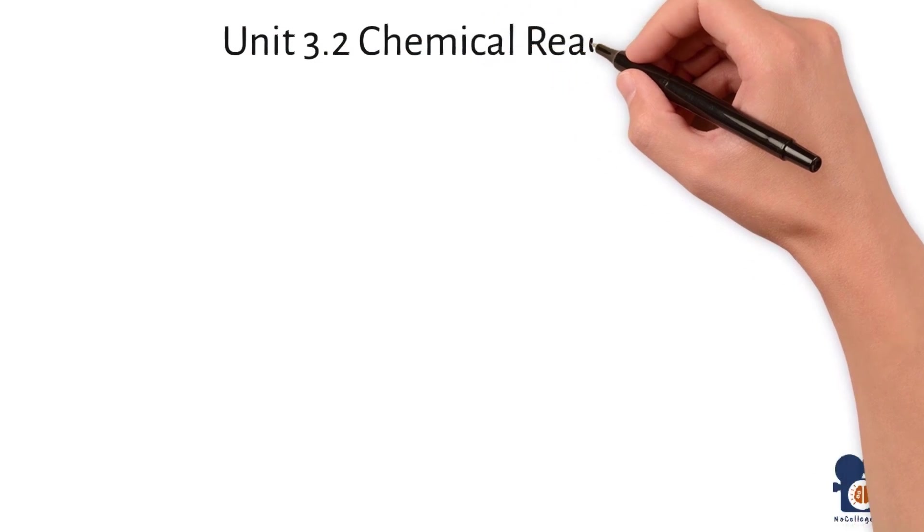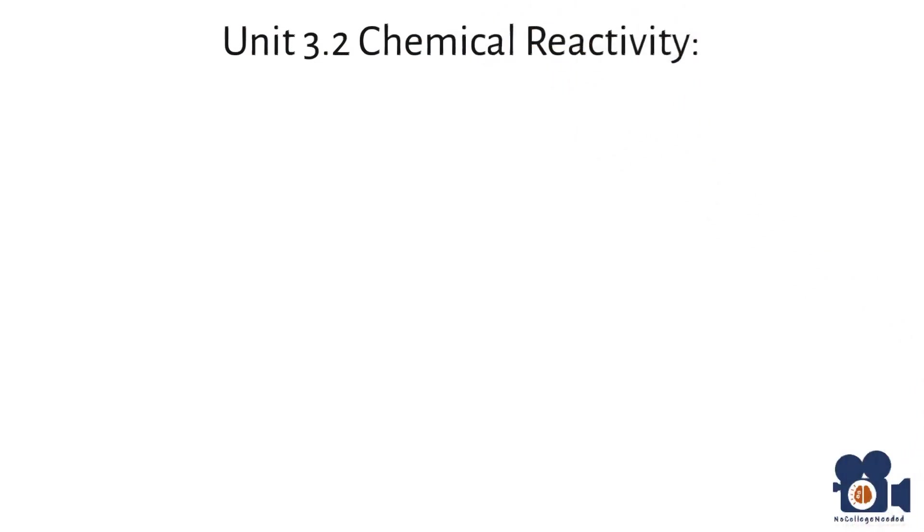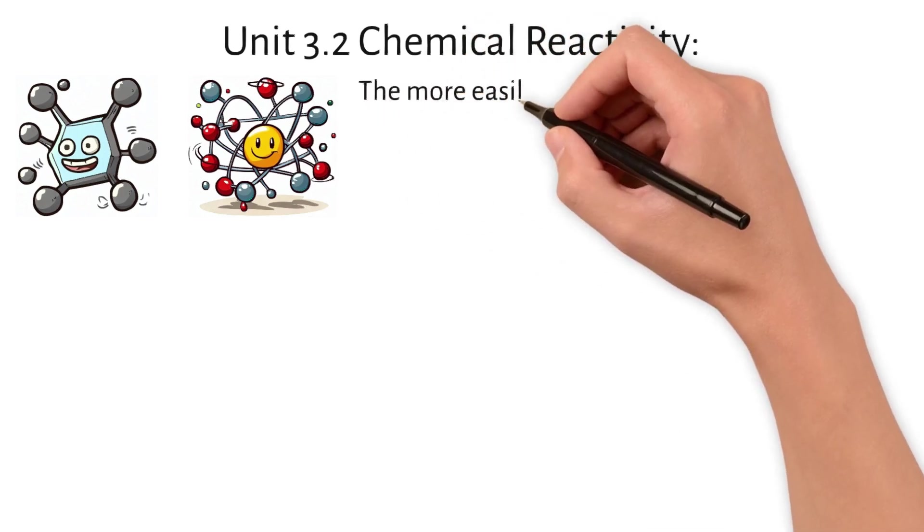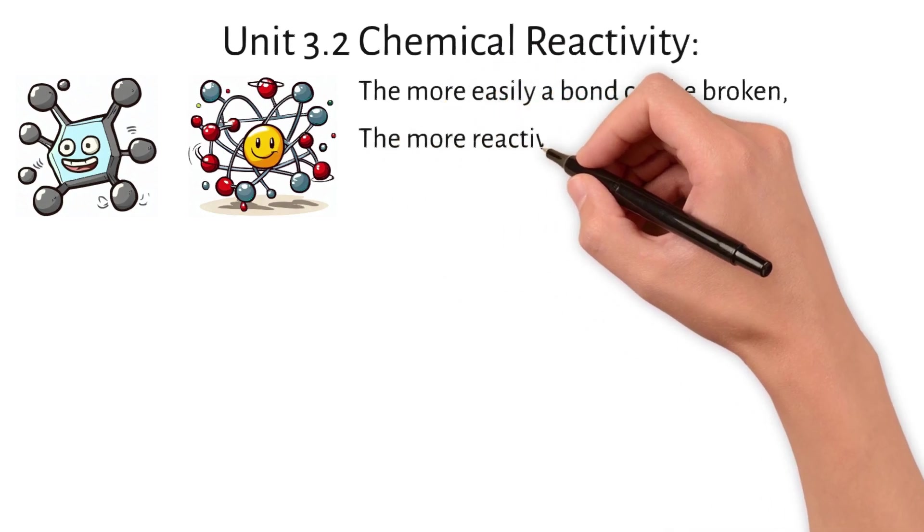Unit 3.2, chemical reactivity. Chemical reactivity is determined by the nature of chemical substance's bonds and electron configuration of its atoms, allowing it to undergo chemical reactions with other substances. In general, the more easily a bond can be broken, the more reactive the substance will be.